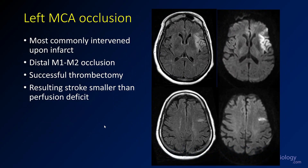This is a left MCA occlusion — the most commonly intervenable infarct. In this case, it was in the distal M1 extending into the M2. This patient got a successful thrombectomy. You can see there is an area of FLAIR abnormality along the insula in the lateral frontal lobe along the sylvian fissure, and on diffusion there's an area of completed infarct there.